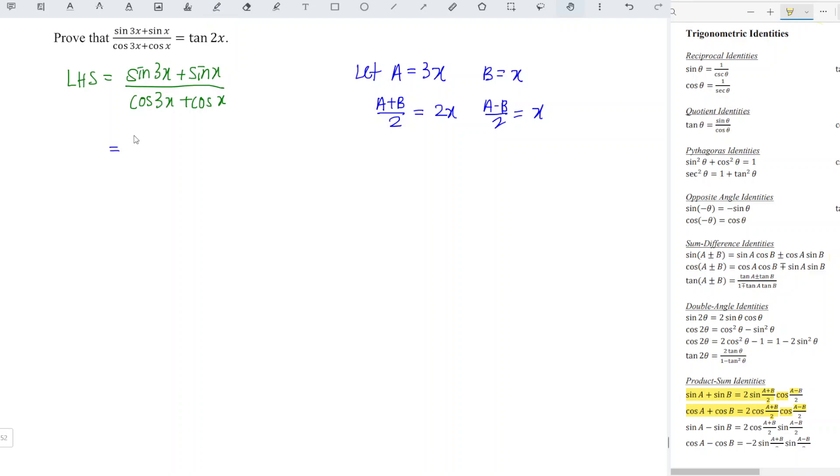For the numerator, we have 2 sine 2x cosine x, divided by 2 cosine 2x cosine x. Now we simplify. We have 2 over 2.